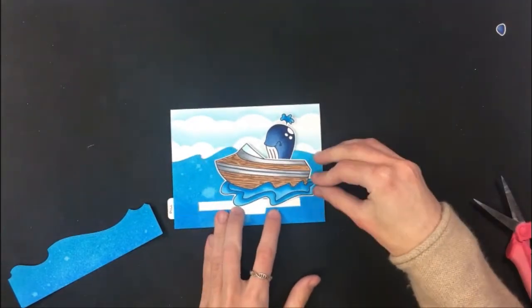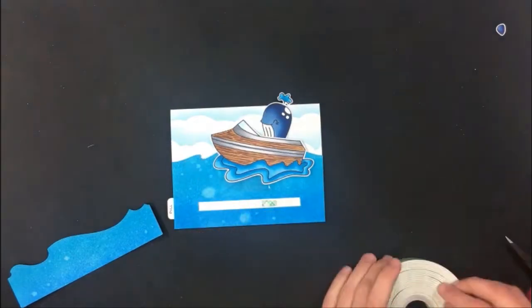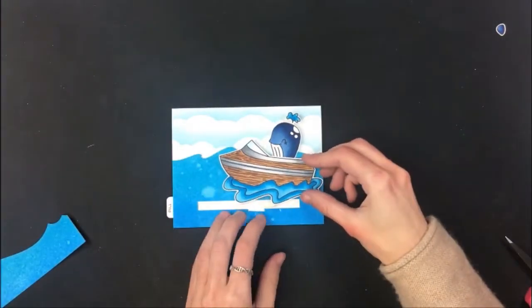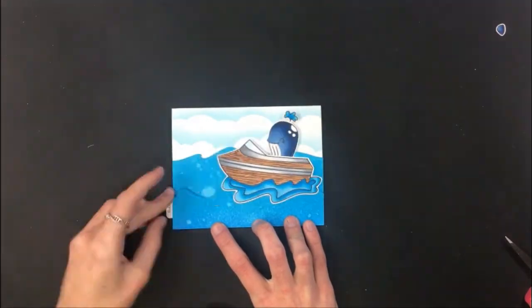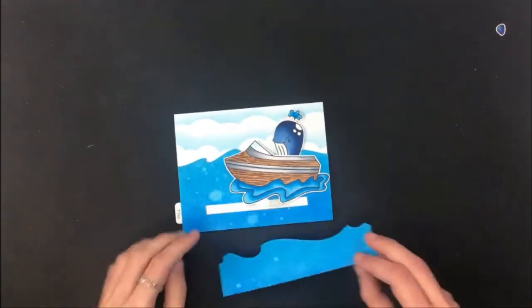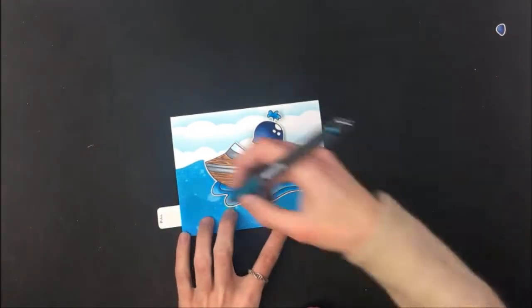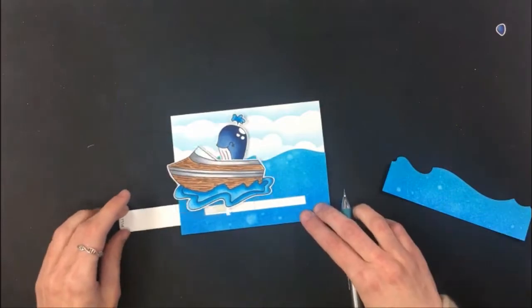So now I'm putting my foam tape on that slider piece because that is what's going to attach to the acetate and make the boat actually move. Then I'm coming in with my wave and making sure everything lines up and I'm just using pencil marks to indicate where that wave goes up to so I know where I need to be putting the foam tape.